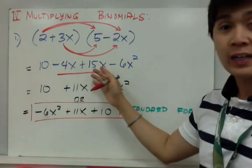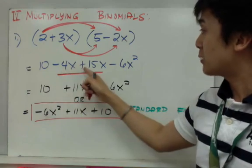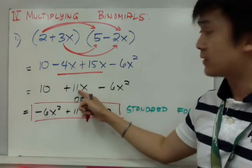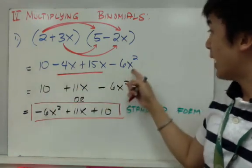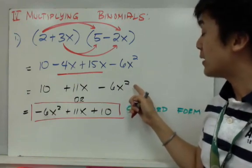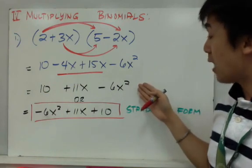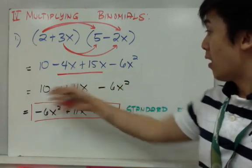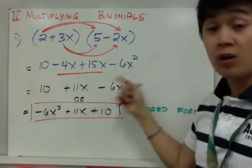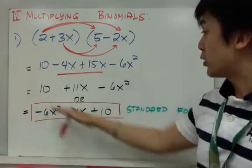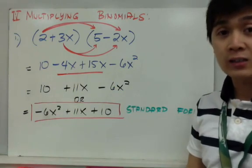On our second line, we can combine like terms. Since these two terms in the middle are like terms, we can add them up. So -4x + 15x will give us 11x, and we'll just copy 10 and -6x². We can no longer simplify this equation because all of them have different exponents.